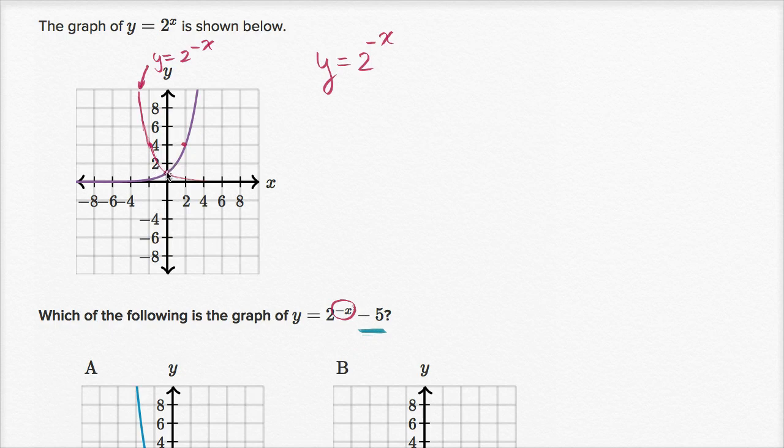So instead of having the y-intercept there, it's going to be five lower. Each hash mark is two, so this is one, two, three, four, five. It's going to be right over there. So shift down by five.